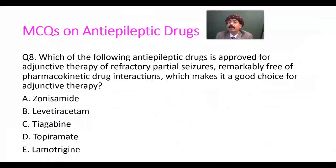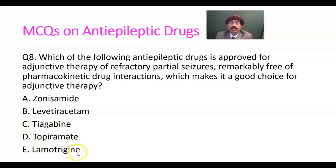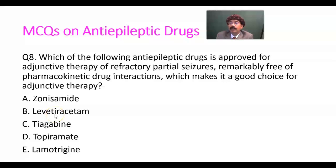Number eight: which of the following anti-epileptic drugs is approved for adjunctive therapy of refractory partial seizure, is remarkably free of pharmacokinetic drug interactions, which makes it a good choice for adjunctive therapy? The answer is levetiracetam, because it is excreted very freely without changing. So levetiracetam is a good choice.